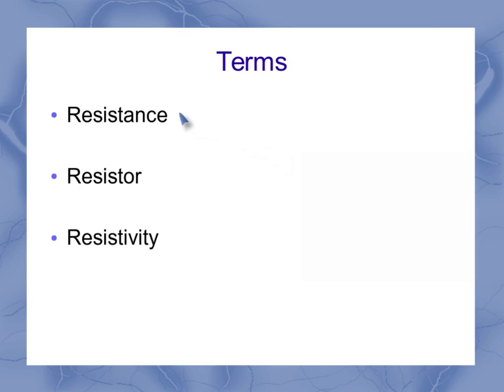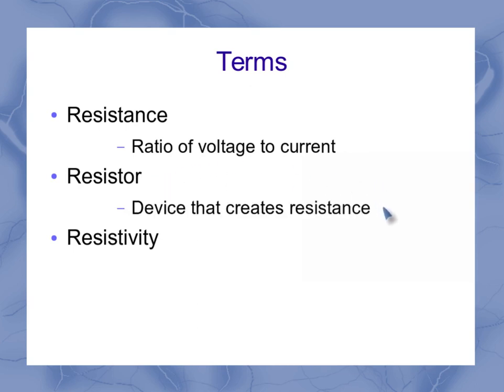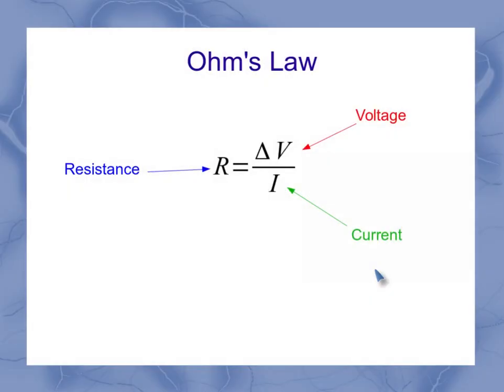Resistance is the ratio of voltage to current. A resistor is a device that creates resistance, and the resistivity is a material dependent property of the device. Now resistance was defined by Ohm's law, so that's how we know that it's the ratio of voltage to current.